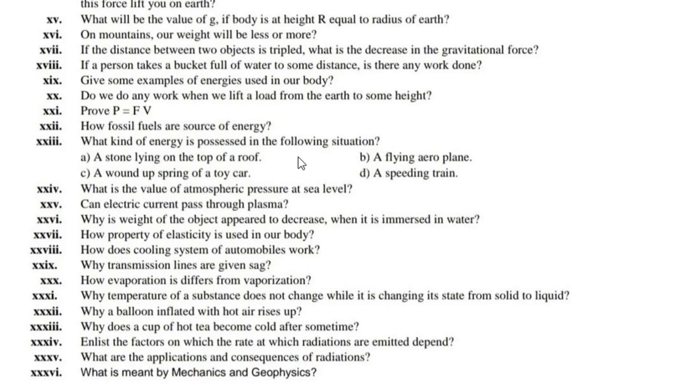What kind of energy is possessed in our following situation? A stone lying on a rooftop, a flying airplane, a wound strip of a toy car, a speeding train. After that we have 24: What is the value of atmospheric pressure at sea level?